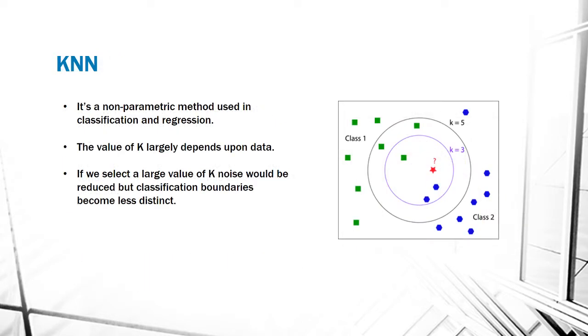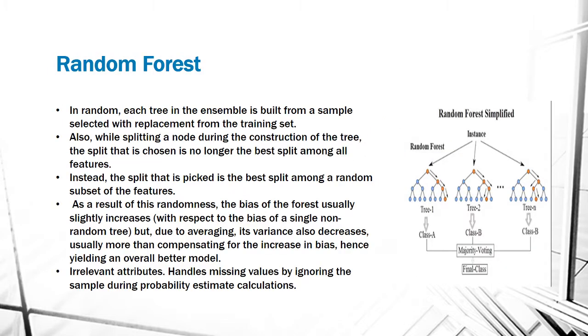KNN is a non-parametric method used in classification and regression. The value of K largely depends upon the type of data. If we select a large value of K, noise would be reduced but classification boundaries would become less distinct.